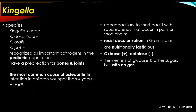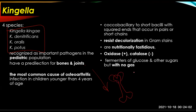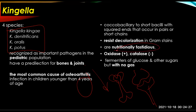Kingella — the genus consists of four species: Kingella kingae, nitrificans, oralis, and potus. These organisms are recognized as important pathogens in the pediatric population with a predilection for bones and joints. They are the most common cause of osteoarticular infection in children younger than four years of age. Characteristics include coccobacillary or short bacilli with squared ends that occur in pairs or short chains, and they resist decolorization in gram stains.